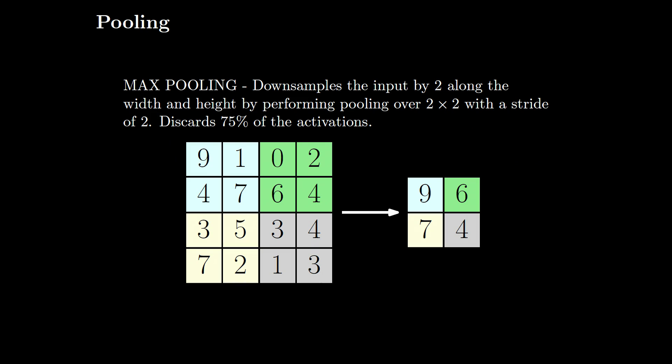The next block we have is the pooling layer. For this example, let us consider max pooling. Max pooling discards 75 percent of the activations in this case. What exactly happens here is we downsample the input by 2 along the width and height by performing pooling over a 2 × 2 grid with stride 2. Given the activation map, we take a 2 × 2 grid, identify the maximum value, and keep only the maximum value; we discard the remaining values that are present at that location. Similarly, we move to the next location and see that the maximum value here is 6, the next location 7, and the next location 4.